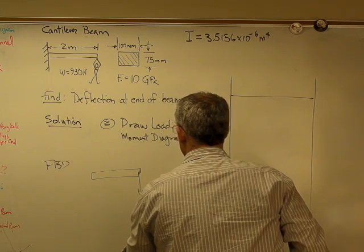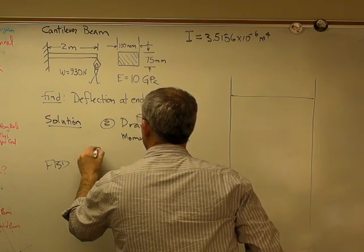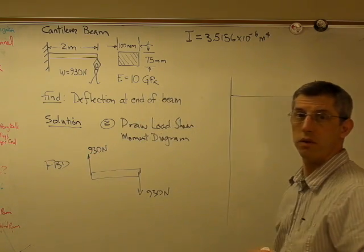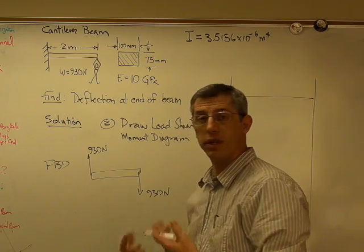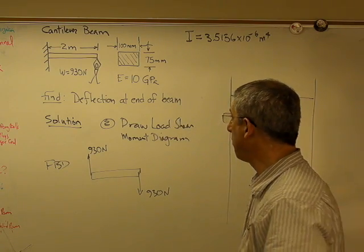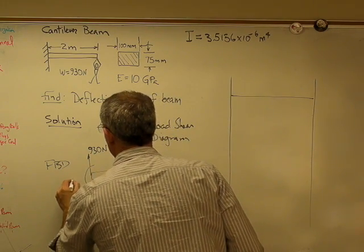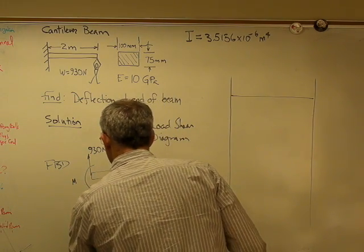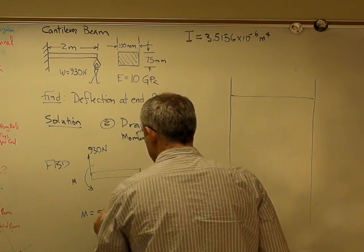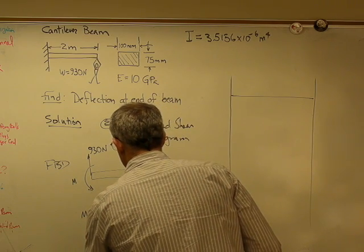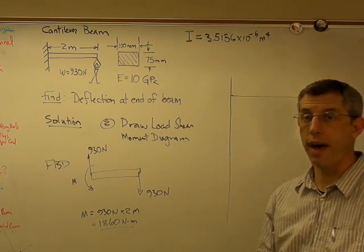I've got the weight here. It's 930 newtons. And obviously there has to be a 930 newton reaction force on the other end. Now two forces separated by a distance form a couple. That creates a moment. And so the moment's going to have to go this way. The resisting moment is going to have to be that. And that moment is going to be 930 newtons times the 2 meters on the beam. So that's 1,860 newton meters. We're going to need to know that.